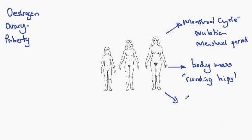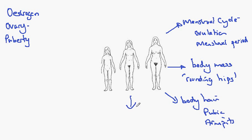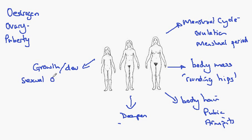As with males, we would see the development of body hair — in this case, pubic hair and in the armpits. The female voice does deepen, but what doesn't happen is the breaking process — the sudden change in the voice. It's usually a slow and gradual process. We would also expect to see the growth and development of sexual organs, including the breasts.